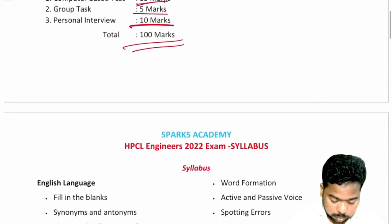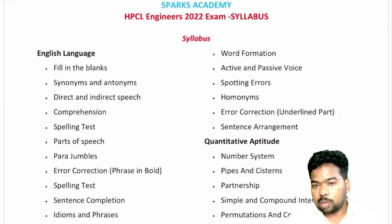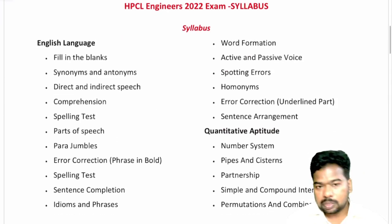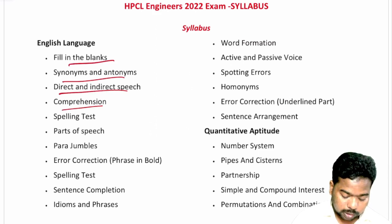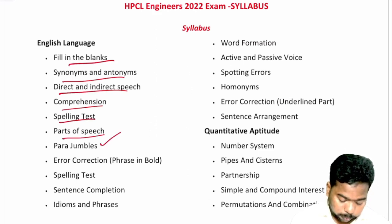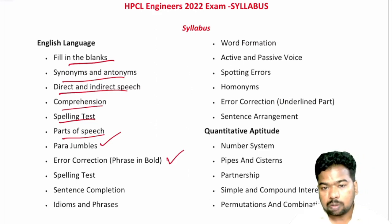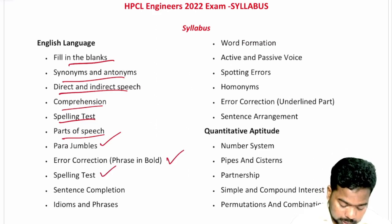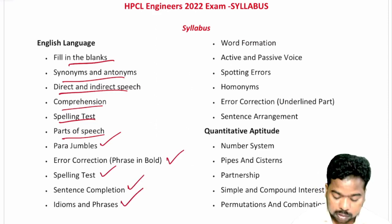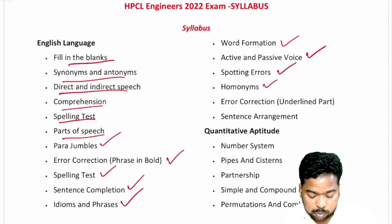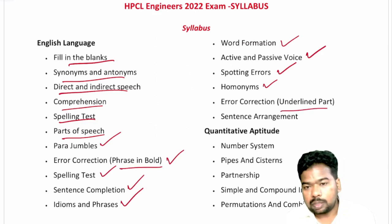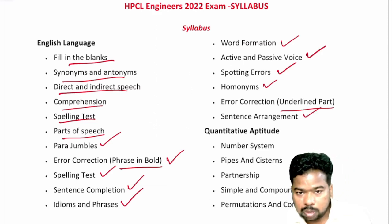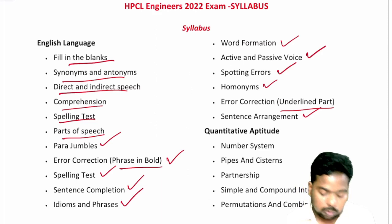Part 1 starts with English, with 15 questions. The topics include fill in the blanks, synonyms and antonyms, direct and indirect speech, comprehension, spelling test, parts of speech, para jumbles, error correction, sentence completion, idioms and phrases, word formation, active and passive voice, spotting errors, and homonyms.